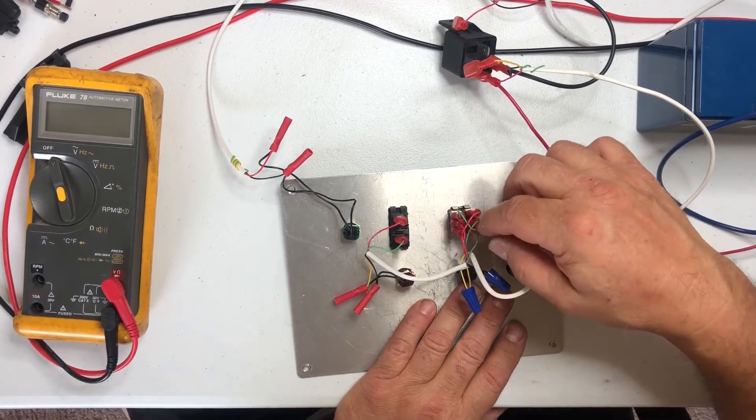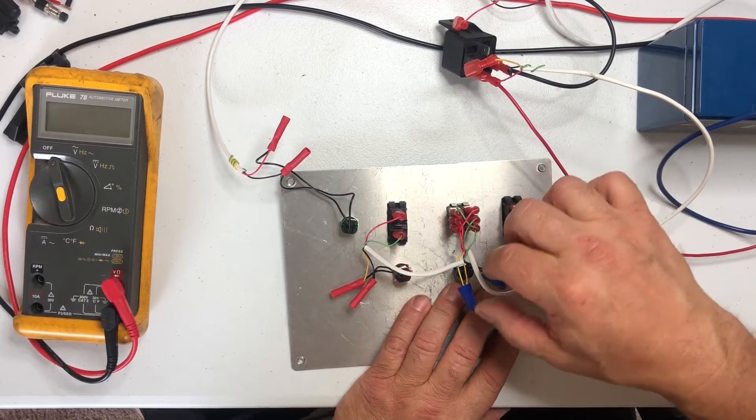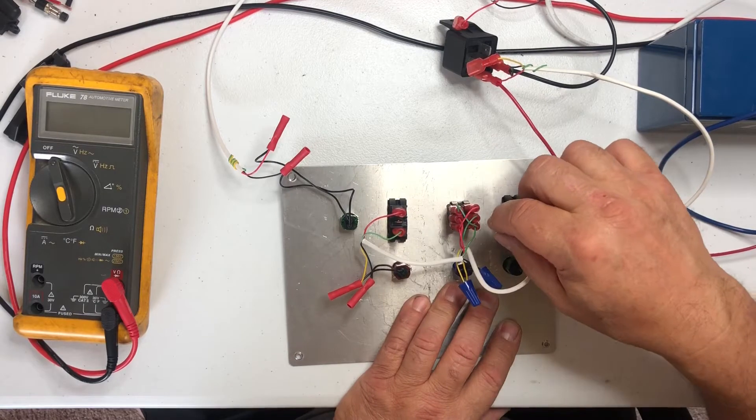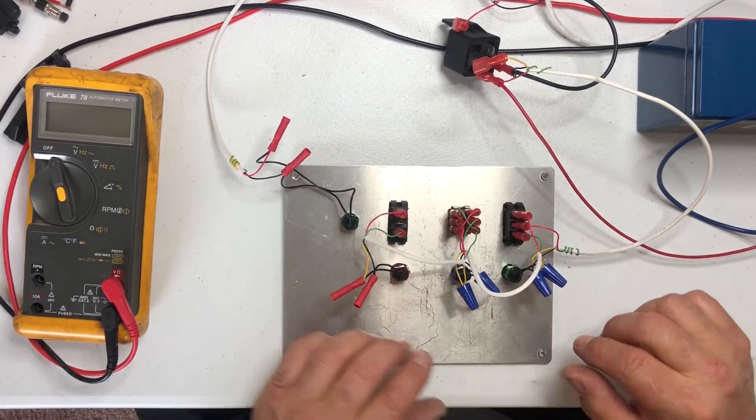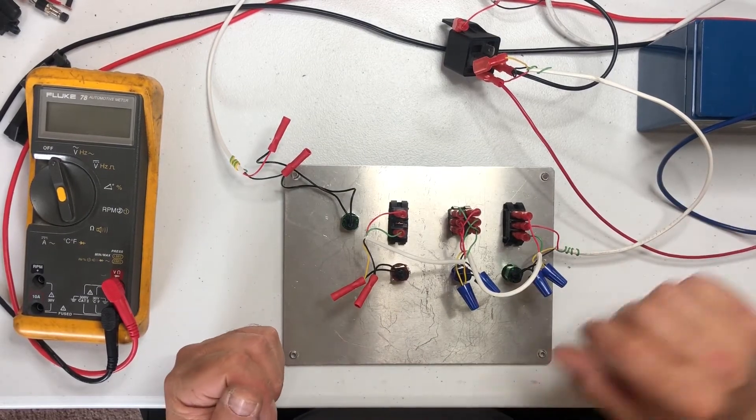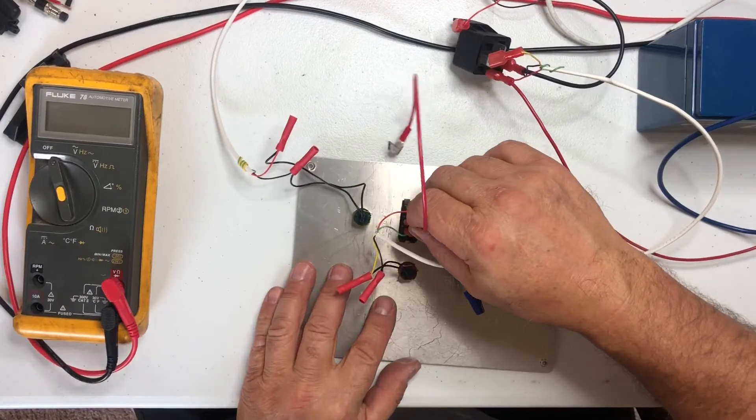You have your reversing polarity switch here, and then the crisscross goes over to your last switch. This last one goes to the coil on the relay.